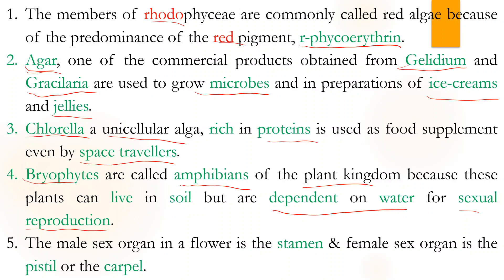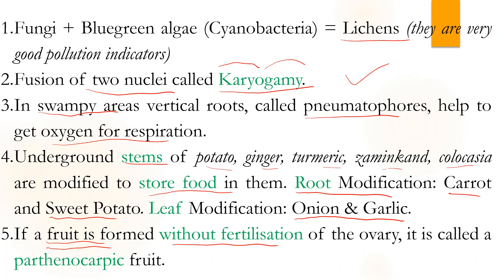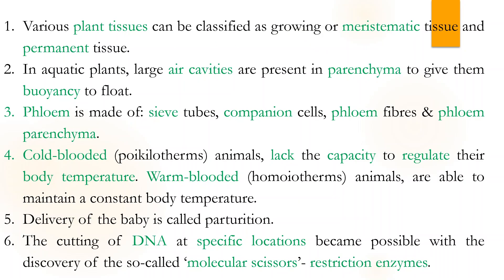The male sex organ of flowers is the stamen, and the female sex organ is called pistil or carpel. Plant tissues can be classified into two categories: meristematic or permanent. Aquatic plants that grow in water have air cavities within the parenchyma to give them buoyancy — they puff up like balloons, like water hyacinth or something similar.